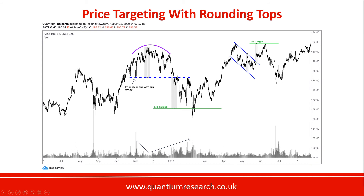We use the price level from the prior clear and obvious trough as the breakout level and apply a minimum one-to-one projection from there. That prior clear and obvious trough level is identified, the top is located, and that distance is used to project from the point of breakout. You can see how price touched that target.